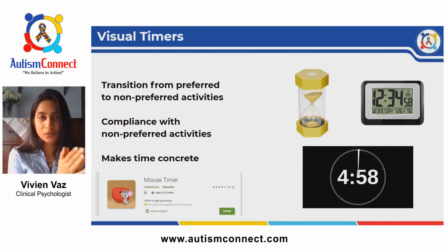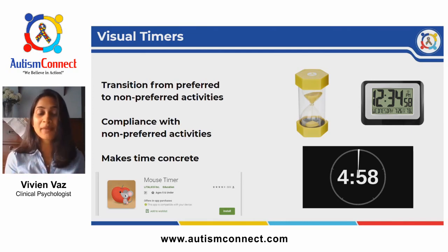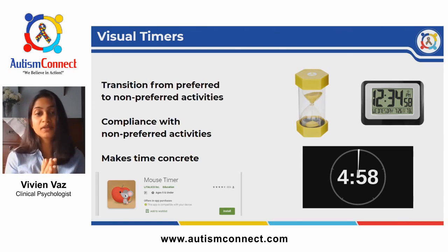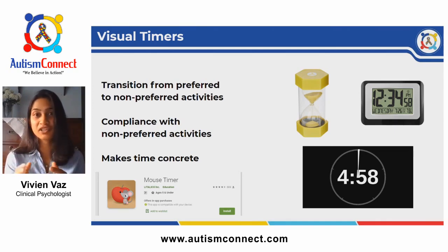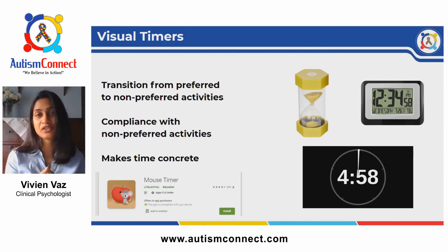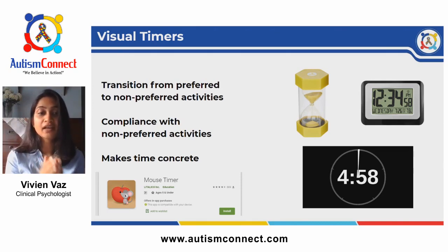Transitions basically mean moving from one task or situation to another, so we need to prepare children for this transition. Visual timers are a great tool to help with preparing for transitions. For example, if your child is watching TV and you want them to come and do their homework, telling them suddenly to stop watching TV will cause frustration and anger — they may not even follow your instruction. But if you use a visual timer, it will help them see how much time is left and prepare their mind and body for the transition.